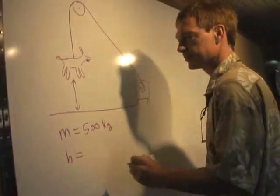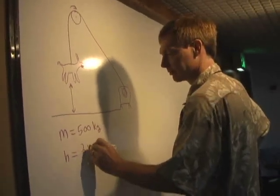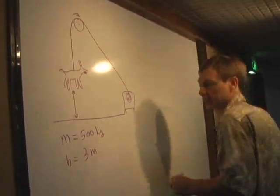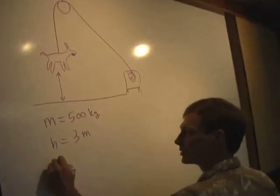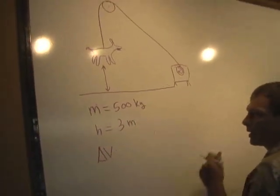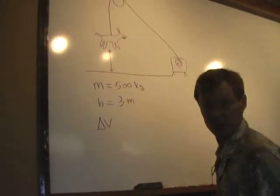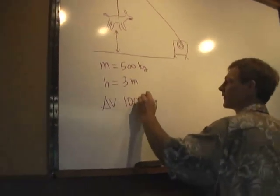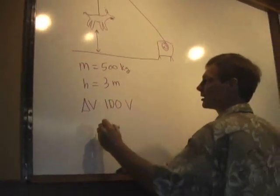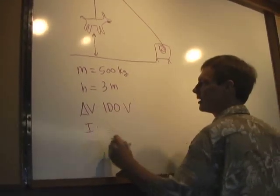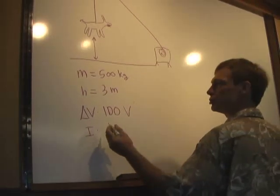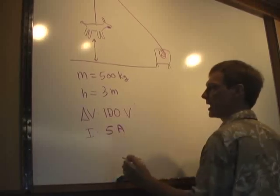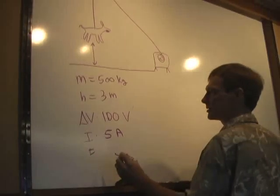And I'm going to raise it a height of three meters. That'll be sticking up in the air. And this motor here has a voltage of, let's see, let's say it's 110 volts, 100 volts. Let's make it 100 volts because I didn't bring a calculator. And let's say we've got a current of five amps, and it takes 10 seconds.